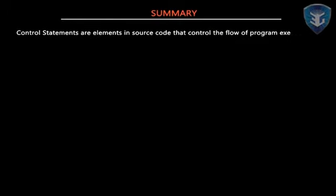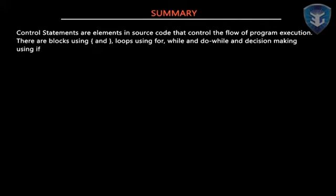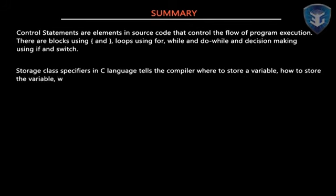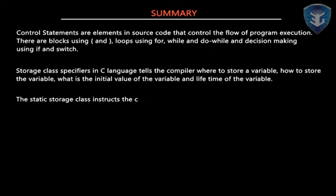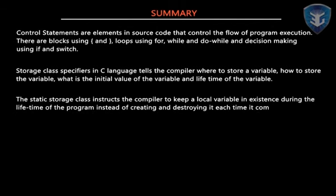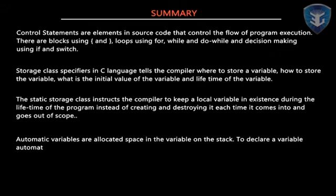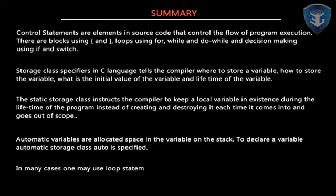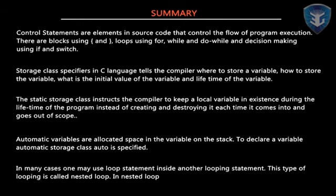To summarize what we have learned: control statements are elements in source code that control the flow of program execution, including blocks, loops using for, while, and do-while, and decision making using if and switch. Storage class specifiers in C tell the compiler where to store a variable, how to store it, its initial value, and its lifetime. The static storage class keeps a local variable in existence during the lifetime of the program. Automatic variables are allocated space on the stack, and in nested loops, the inner loop is executed first and then the outer.